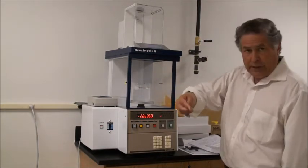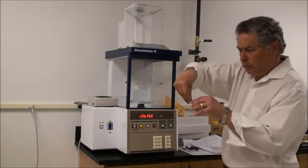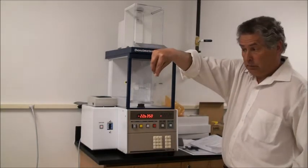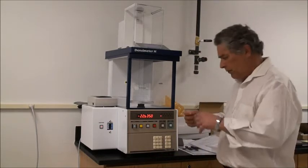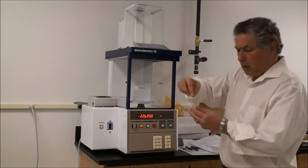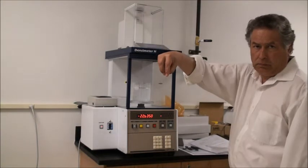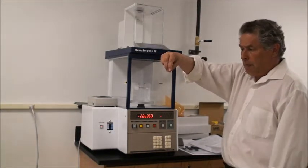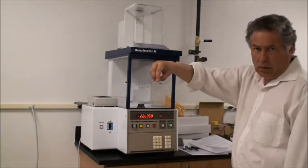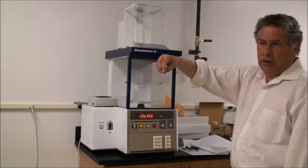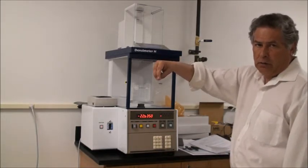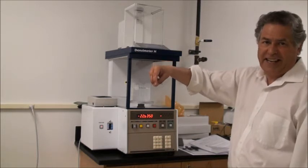We also have some of the smaller weights, and then we also have some weights that are very light, called OMA weights. The lighter weights, like the OMA weights, are typically used with material that has a density of greater than one. In other words, products that sink.